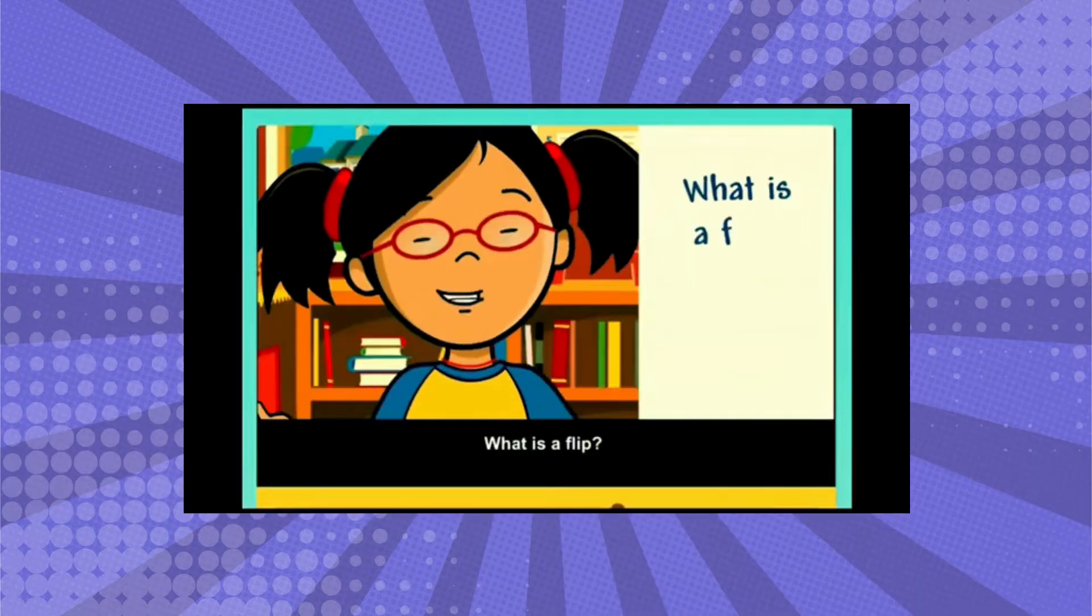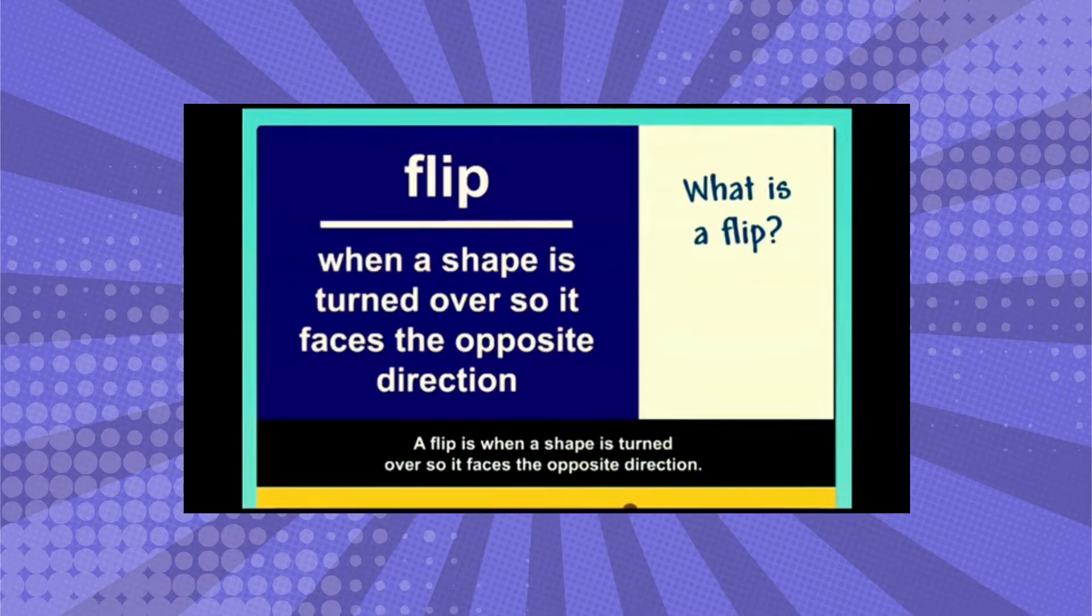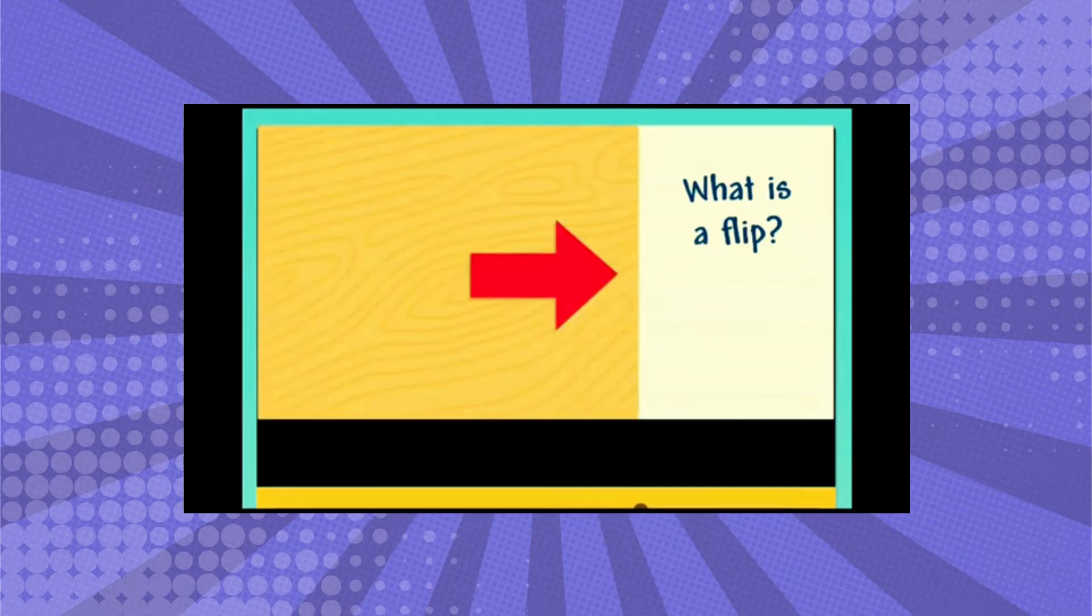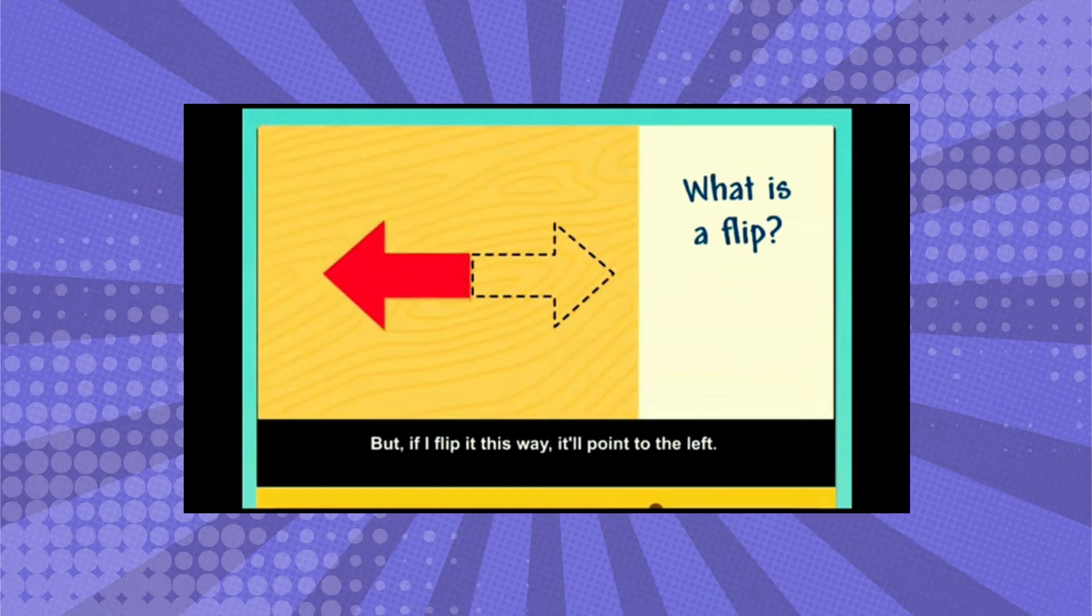What is a flip? A flip is when a shape is turned over so it faces the opposite direction. This arrow points to the right, but if I flip it this way, it'll point to the left. It'll face the opposite direction.